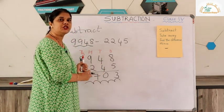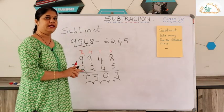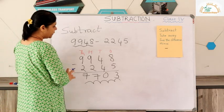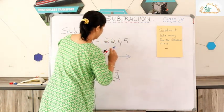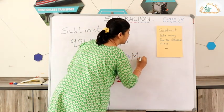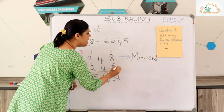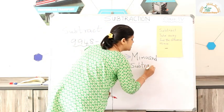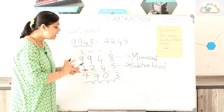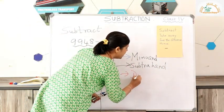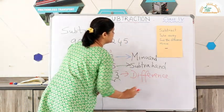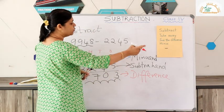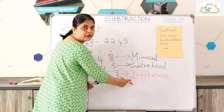Before we proceed, let me tell you a few terms. The greater number on top is called the minuend. The smaller number which we write below — the number we subtract — is called the subtrahend. The answer you get after subtracting is called the difference.